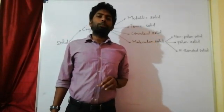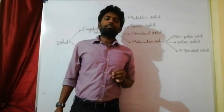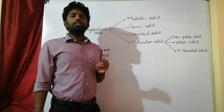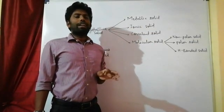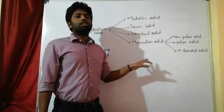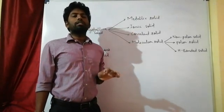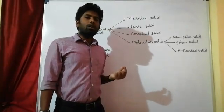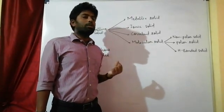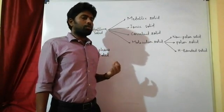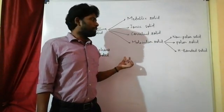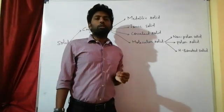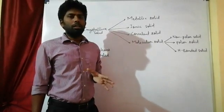Point number 4: solids are a rigid body — they cannot be compressed. Point number 5: the constituent particles in solids cannot move from their fixed position; they can only oscillate or vibrate about their mean position. These are the basic characteristics of solids.